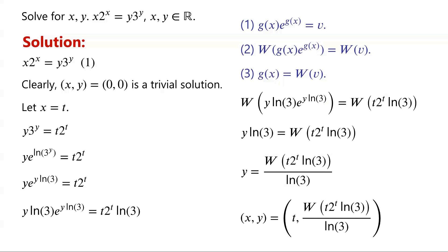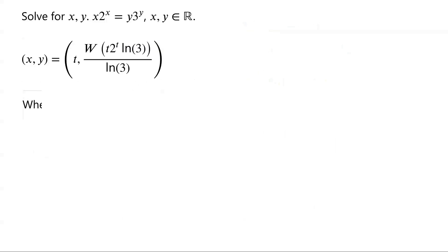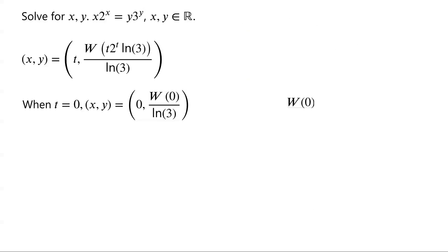It seems there are indefinitely many solutions — for a specific value of t, there is a corresponding solution (x, y). Is this true, and what values can t take? If t equals 0, then xy equals (0, W(0) / ln(3)). Note that W(0) is 0, so the corresponding solution is (0, 0), the trivial solution mentioned earlier.